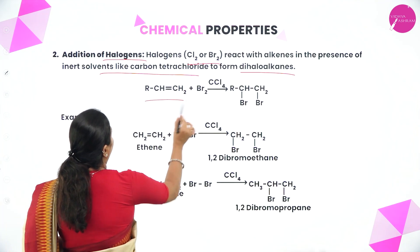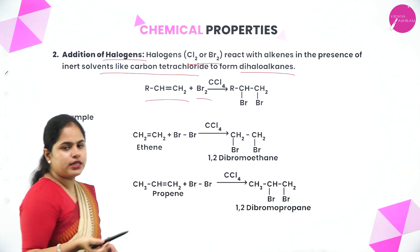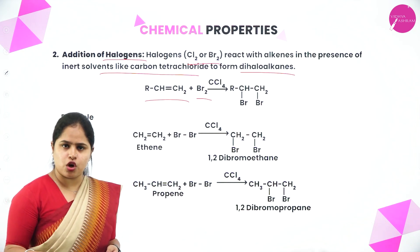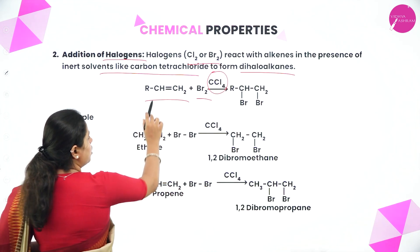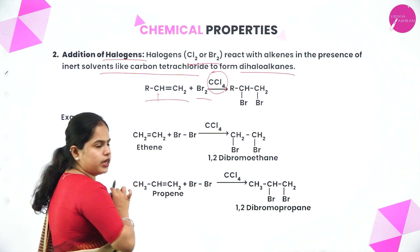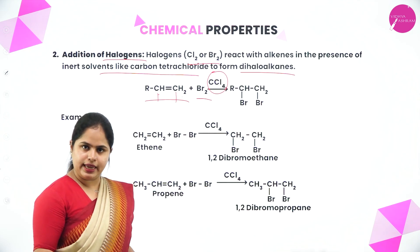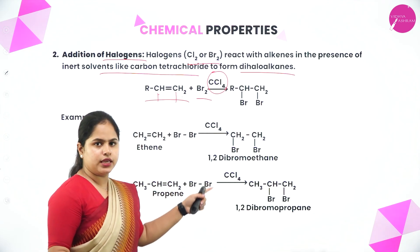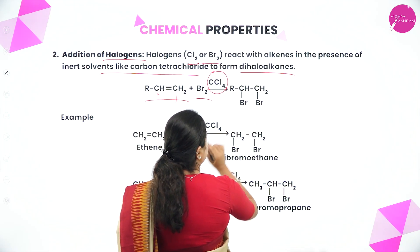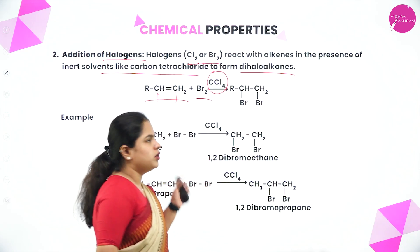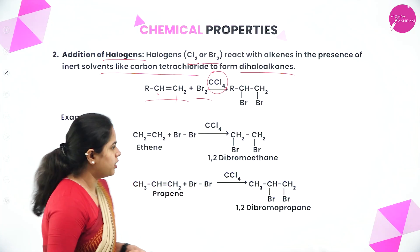RCH=CH2 to which bromine is added in the presence of an inert solvent like CCl4. What happens across this double bond: one bromine atom will be attached here and one bromine atom will be added here. You will get a dihaloalkane: RCH(Br)–CH2Br. The double bond becomes a single bond, and just the bromine is added — no other changes happen.